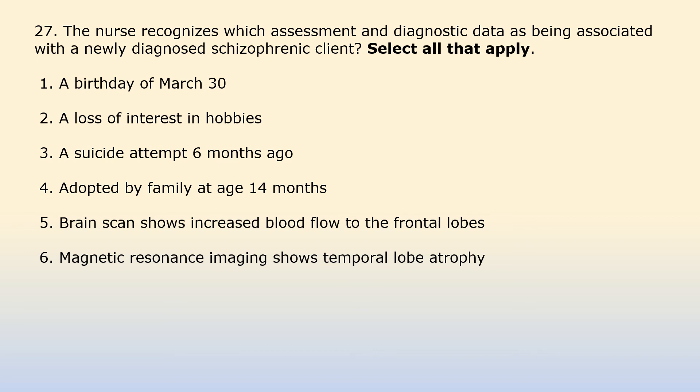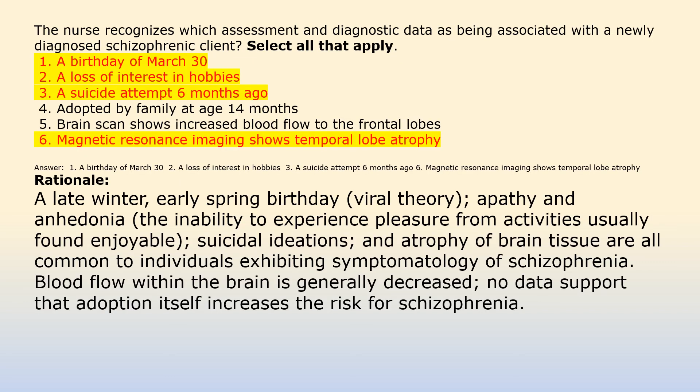Which assessment and diagnostic data are associated with a newly diagnosed client with schizophrenia? Select all that apply. Option 1: A birth date of March 30. Option 2: A loss of interest in hobbies. Option 3: A suicide attempt six months ago. Option 4: Adopted by family at age 14 months. Option 5: Brain scan shows increased blood flow to the frontal lobe. Option 6: Magnetic resonance imaging shows temporal lobe atrophy. Answer: A loss of interest in hobbies, a suicide attempt six months ago, and MRI showing temporal lobe atrophy. A late winter/early spring birthday supports the viral theory. Apathy and anhedonia, suicidal ideations, and atrophy of brain tissue are all common symptomatology of schizophrenia. Blood flow within the brain is generally decreased, not increased. No data support that adoption itself increases the risk for schizophrenia.